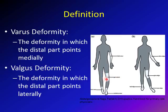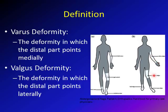Genu varum is the same concept. The distal part of the knee, which is the lower leg, is pointing towards the midline. In contrast, valgus deformity is the deformity in which the distal part points laterally. As shown on the graph, this is cubitus valgus because the forearm points away from the midline.